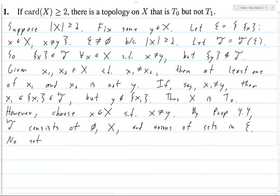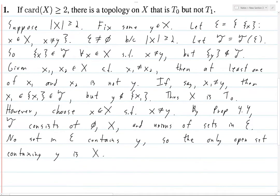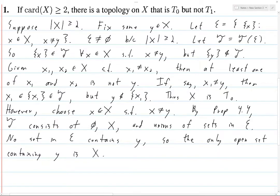No set in E contains y, so the only open set containing y is the open set X, which is the entire space, because the empty set certainly does not contain y because it's empty. And no union of sets in E can contain y because none of the sets in E contain y themselves. So you can't union them and get something that's not in any of the things that you're unioning. So the only open set containing y is X.